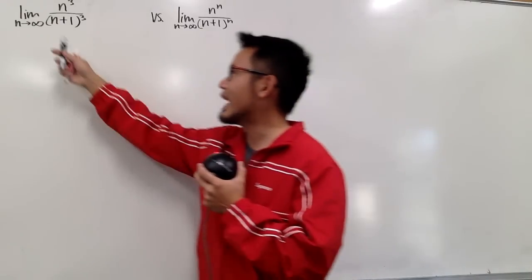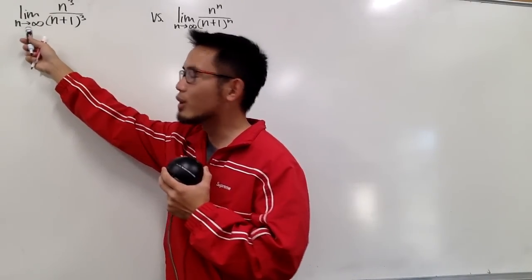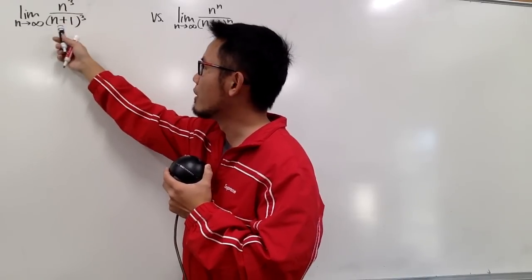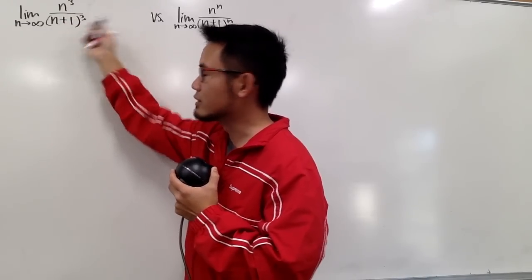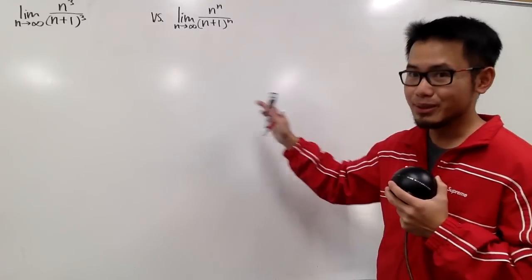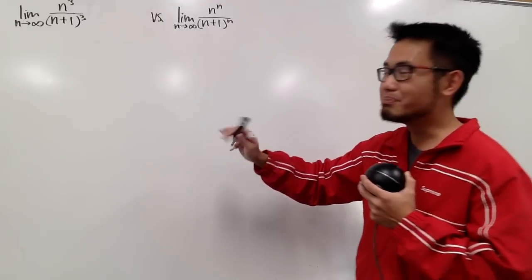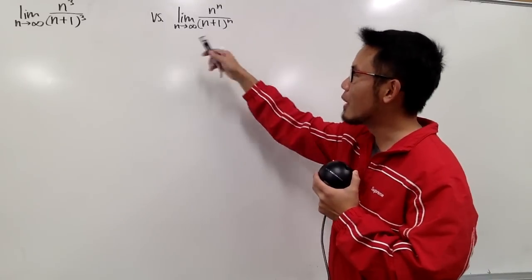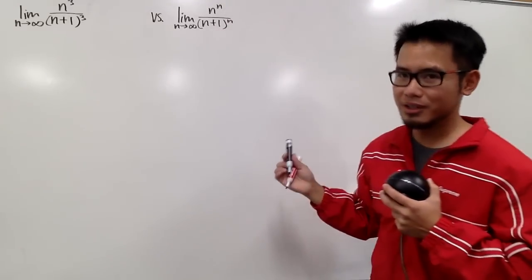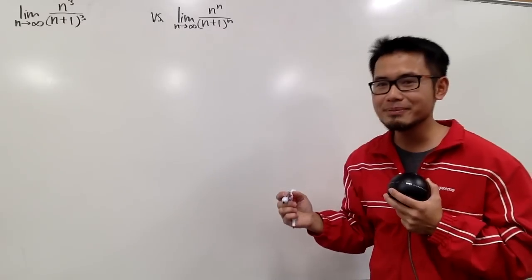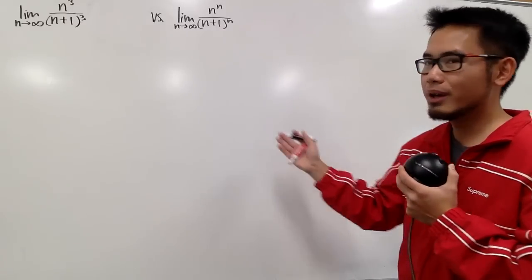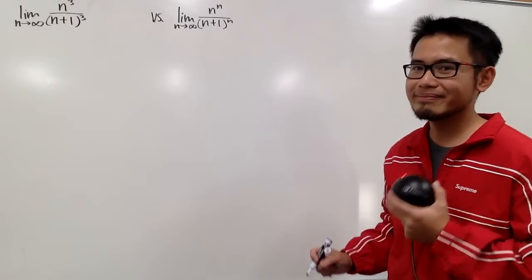We have the limit as n goes to infinity of n to the third power over (n+1) to the third power. For the second one, it looks similar to the first, but instead of the third power we have the nth power. Do you think we are going to end up with the same answer or not?